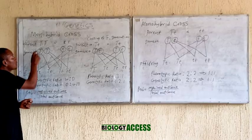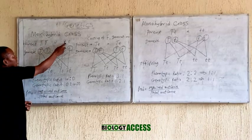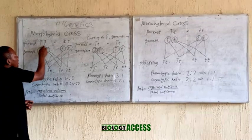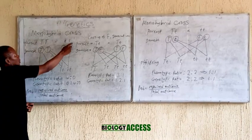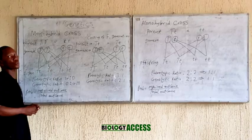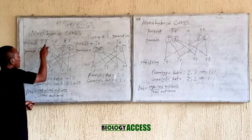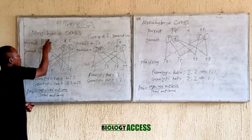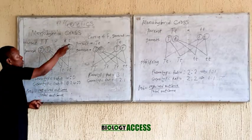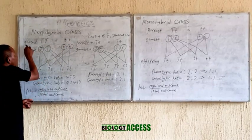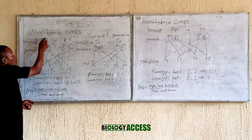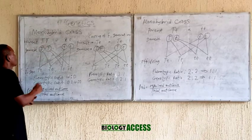Capital letter T means dominant and small letter t is recessive. So this individual is tall and this one is short. We will be crossing a tall pea plant with a short pea plant. This is the parent generation — tall and short.